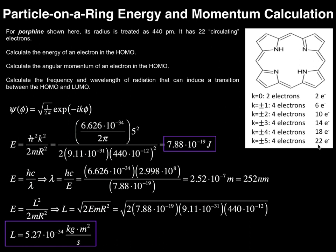Now let's calculate the frequency and wavelength of radiation that can induce a transition between the HOMO and the LUMO. We just need to use this energy calculation to determine what wavelength of light, what frequency of light, could induce this transition. We can use this equation from general chemistry: energy equals Planck's constant times the speed of light divided by wavelength.